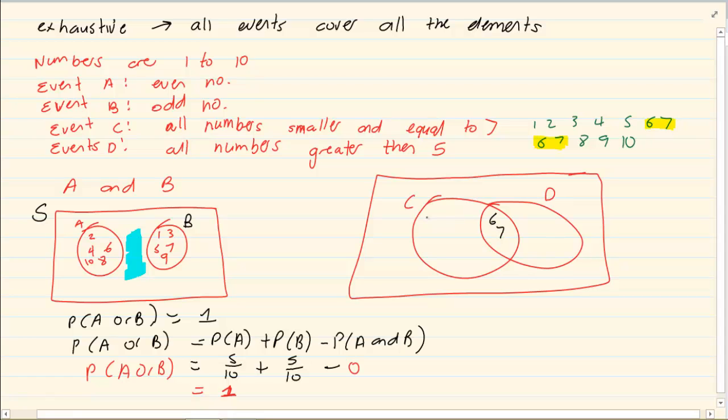So I have 6 and 7 but here I have 1, 2, 3, 4, 5. And here I have 6 and 7, 8, 9, 10.